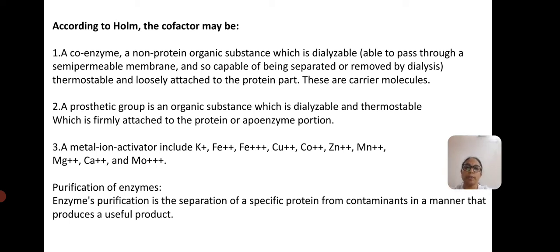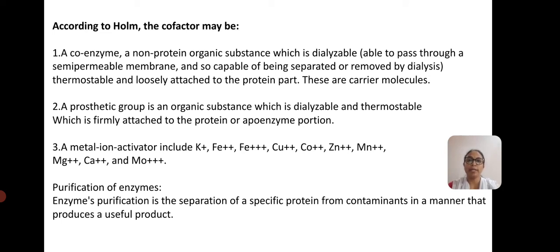A prosthetic group, according to HOM, is an organic substance which is dialyzable and thermostable, but firmly attached to the protein. Metallic ion activators — inorganic cofactors — include potassium, ferrous, ferric, copper, cobalt, zinc, manganese, magnesium, and molybdenum ions.